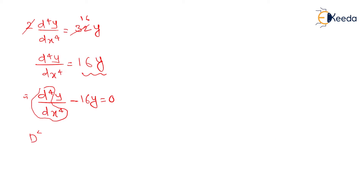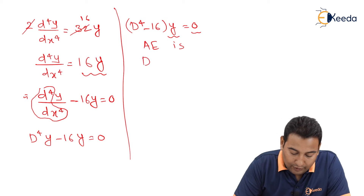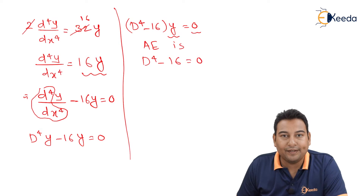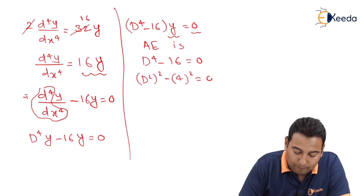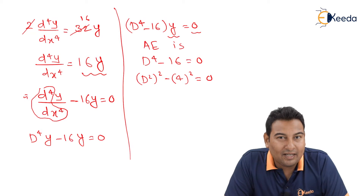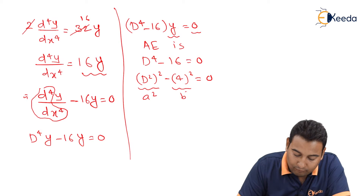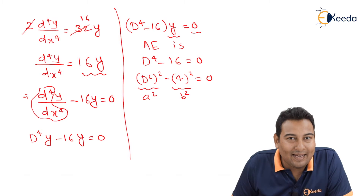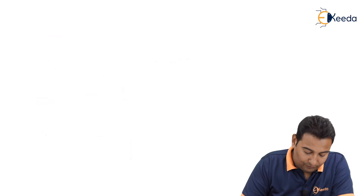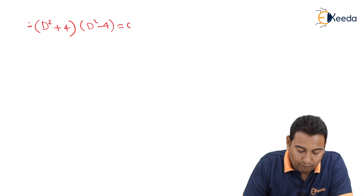Let's replace d/dx with capital D. Taking y common gives (D⁴ minus 16)y = 0. The auxiliary equation is D⁴ minus 16 = 0. We can write this as (D²)² minus (4)², which factors as a difference of squares: (D² + 4)(D² minus 4) = 0.